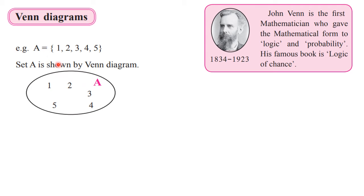See the example here. You can see that five numbers are there in set A, so all these elements of set A are written within the figure, and the name of the set is also written inside as a capital alphabet. This figure shows us the Venn Diagram of set A. This was discovered by the mathematician called John Venn, so it is called a Venn Diagram.